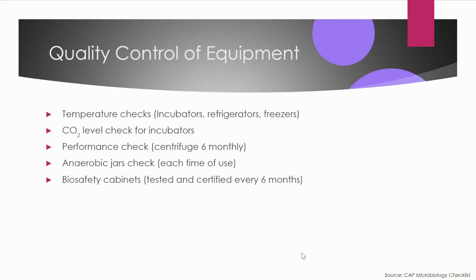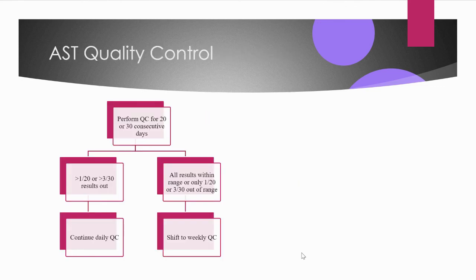AST quality control in most labs is run weekly, but before switching to weekly QC, you must first perform QC for 20 or 30 consecutive days. If more than one out of 20 or more than three out of 30 results are out of range, continue daily QC — it indicates a problem with media, the ATCC isolate, or the AST system. Find the root cause and remove it. If results are within range or only one out of 20 or three out of 30 are out, the QC is acceptable and you can shift to weekly QC.